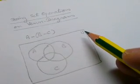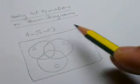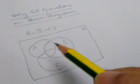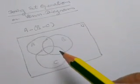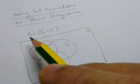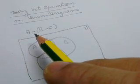The universal set is the whole region inside the rectangle. The inside the circles A, B, and C are sets A, B, and C. We have to shade the region of the set A minus B minus C.